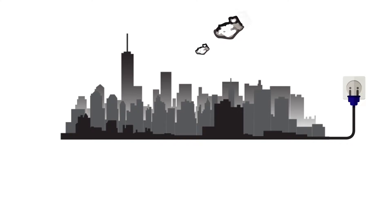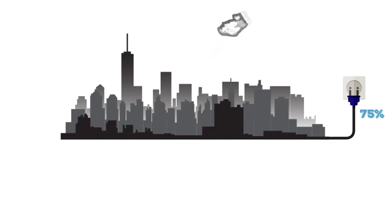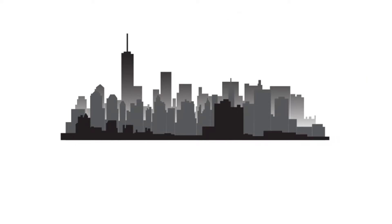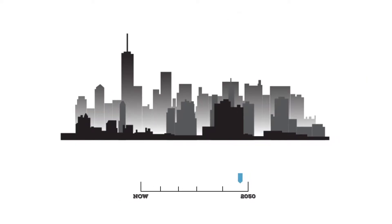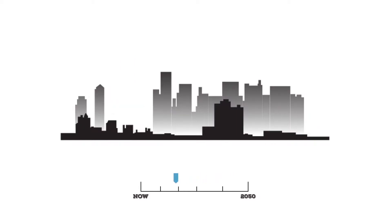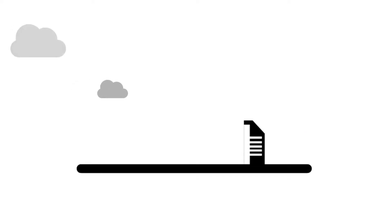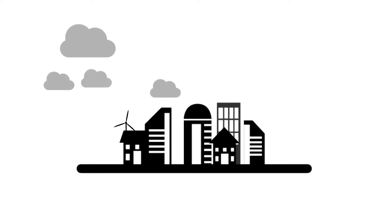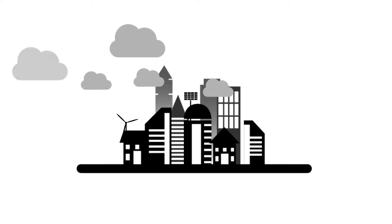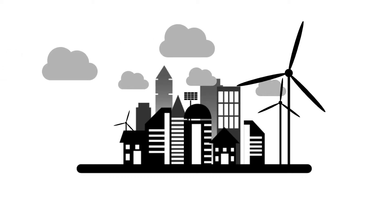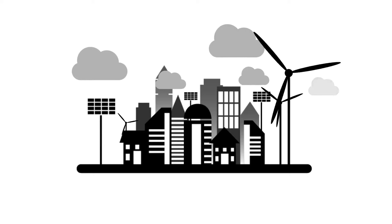Today, it's estimated that 75% of Africa's energy consumption and related greenhouse gas emissions come from cities. It is also estimated that 75% of buildings that will stand in Africa in 2050 have not yet been built. Therefore, design of cities in Africa, where a lot of the world's development is expected to happen, is crucial to global sustainability. We need to fundamentally change the way we design our cities to minimize consumption of our limited resources.